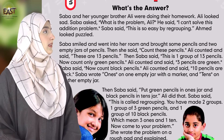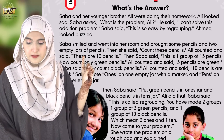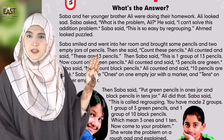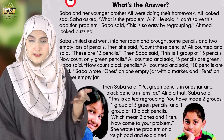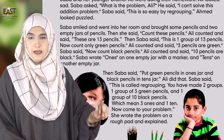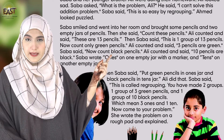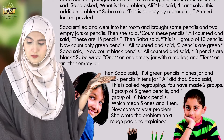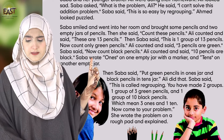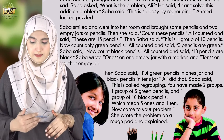Ali نے count کی اور بتایا کہ total pencils 13 ہیں۔ Then Sabah said, 'This is one group of 13 pencils — یہ ایک group ہے 13 pencils کا۔ Now count only the green pencils — صرف green pencils کتنی ہیں؟' Ali counted and said, '3 pencils are green.' Sabah said, 'Now count the black pencils.' Ali counted and said, '10 pencils are black — 3 green اور 10 black.'